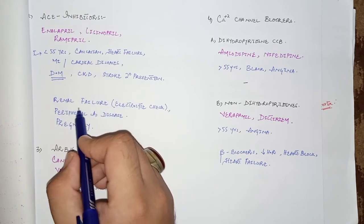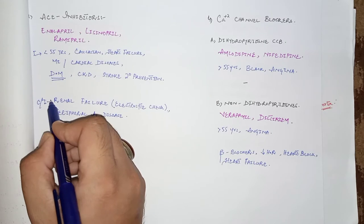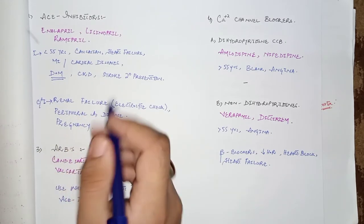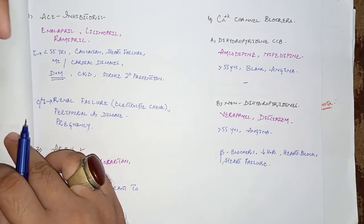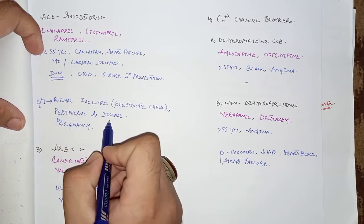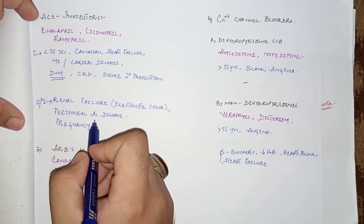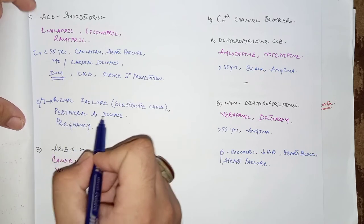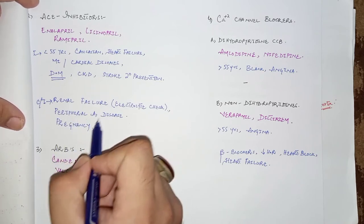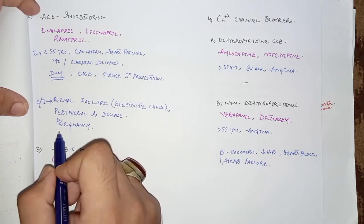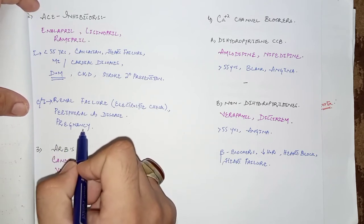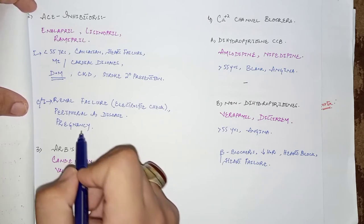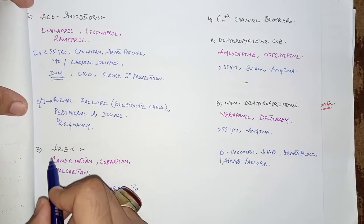The compelling contraindications for ACE inhibitors include renal failure, as these drugs can cause electrolyte imbalance. They should be avoided in peripheral arterial disease and especially in renal artery stenosis, because vasodilation further reduces kidney perfusion. These drugs are also teratogenic and fetotoxic, so they must be avoided in pregnancy, as they reduce perfusion to the fetal kidneys in utero.